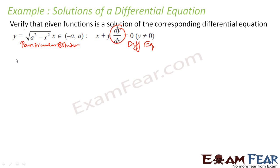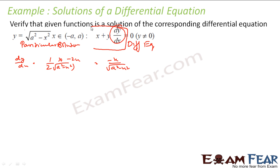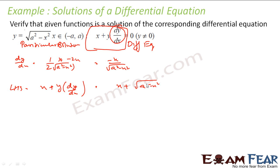Let us find dy/dx. If y = √(a² − x²), then dy/dx = (1 / 2√(a² − x²)) × (−2x) = −x / √(a² − x²). Now let us take the LHS: x + y·(dy/dx) = x + √(a² − x²) × [−x / √(a² − x²)]. The square root terms cancel, giving x − x = 0, and 0 is my RHS. So I have proved LHS = RHS.